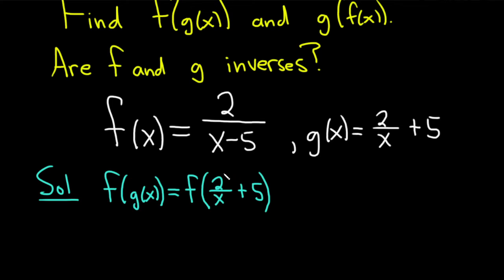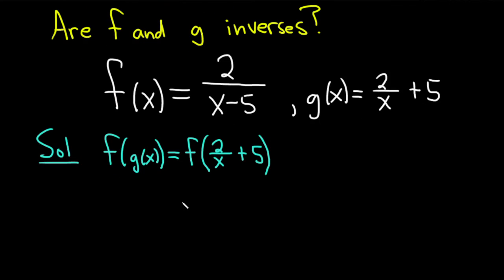Now we're going to take this and plug it into f. So this whole thing here is basically our x. Up here we have f of x equals 2 over x minus 5. So this is going to go where the x is in this function. So now this is equal to 2 over, and instead of x, we just have this expression here. So 2 over x plus 5, and then we have the minus and the 5.